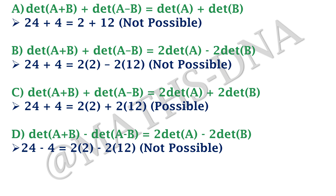Always remember: using an example, you can eliminate an option, but you cannot prove an option correct by using a single example. You should always use examples as counter-examples to eliminate options in any competitive exam such as NET, GATE, state-level, or IIT mathematics exams. The correct answer here is option C.